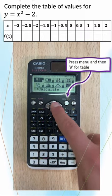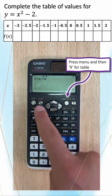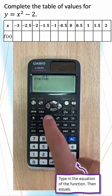We go to menu, then we go to 9 to select table. You type in your function, x squared minus 2.